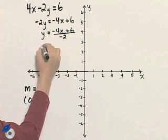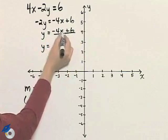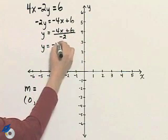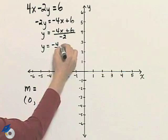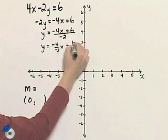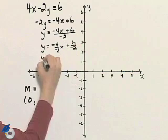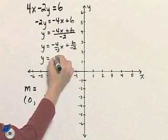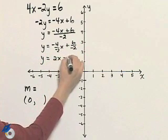The next step, I will divide each term on the top by -2. And so I end up with y equals 2x minus 3.